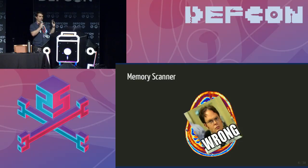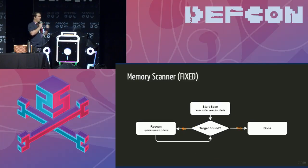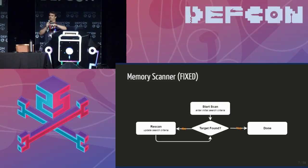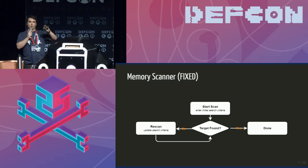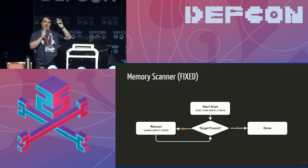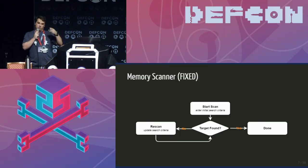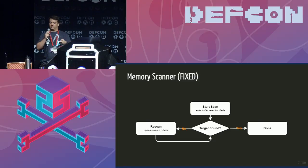What a memory scanner does is you start a scan with some initial criteria, then you run the scan and it will scan the memory of a remote process looking for anything that matches that criteria. If you found your target — which generally means you have one or two addresses — then you're done. If not, you keep updating your criteria to reflect changes in the game and keep scanning until you've narrowed down the list to something you want.